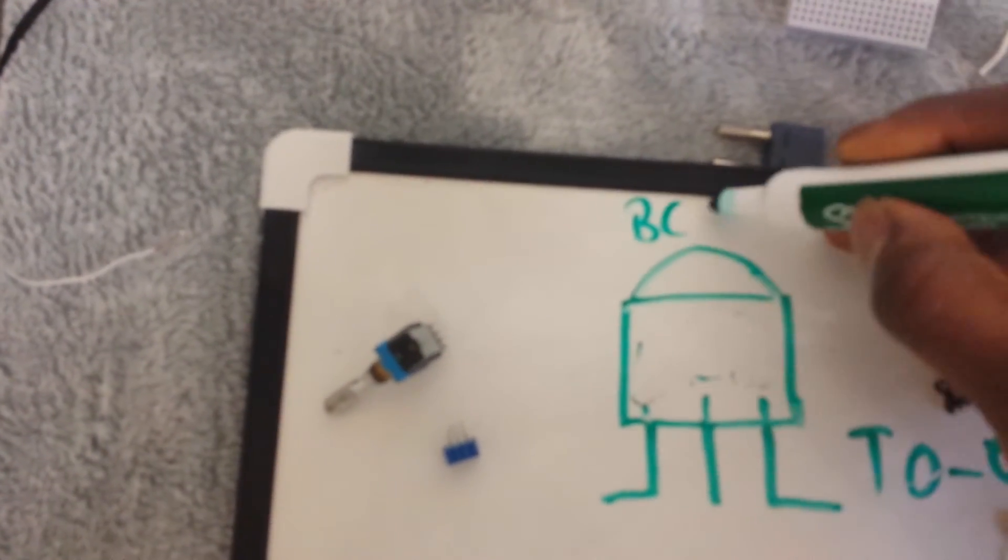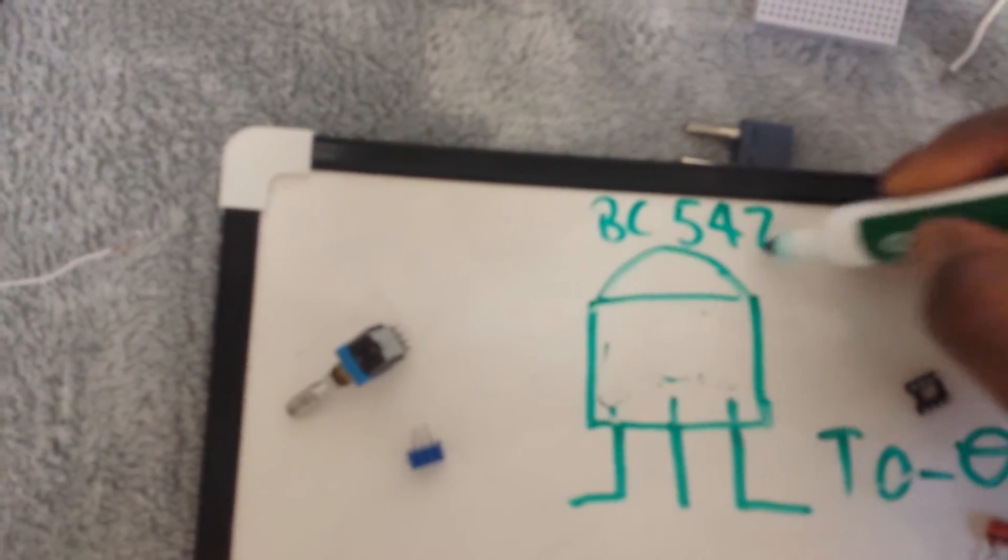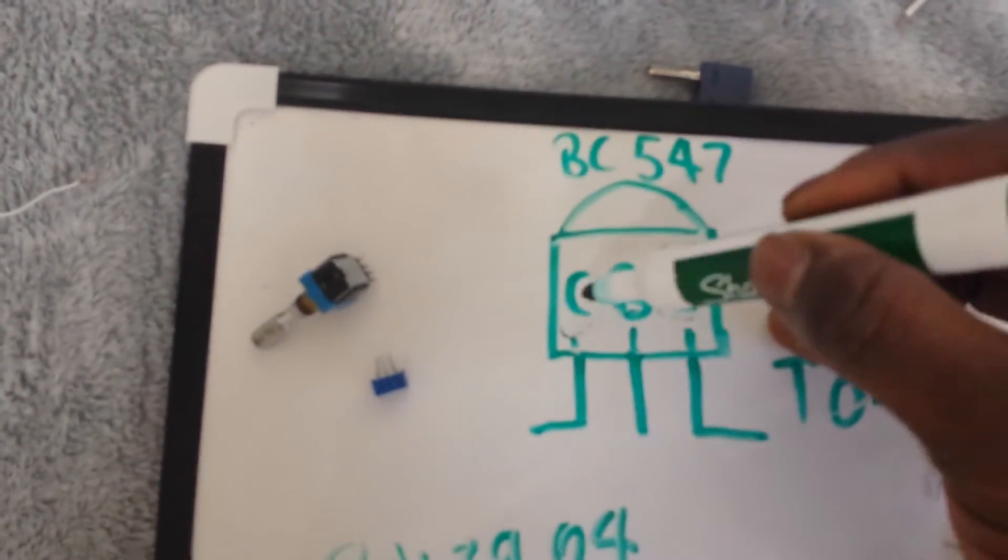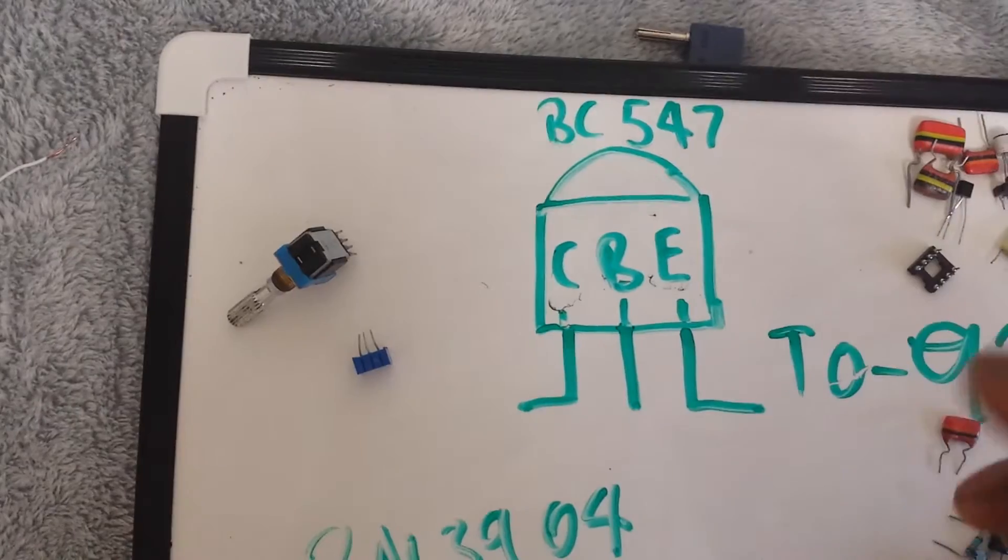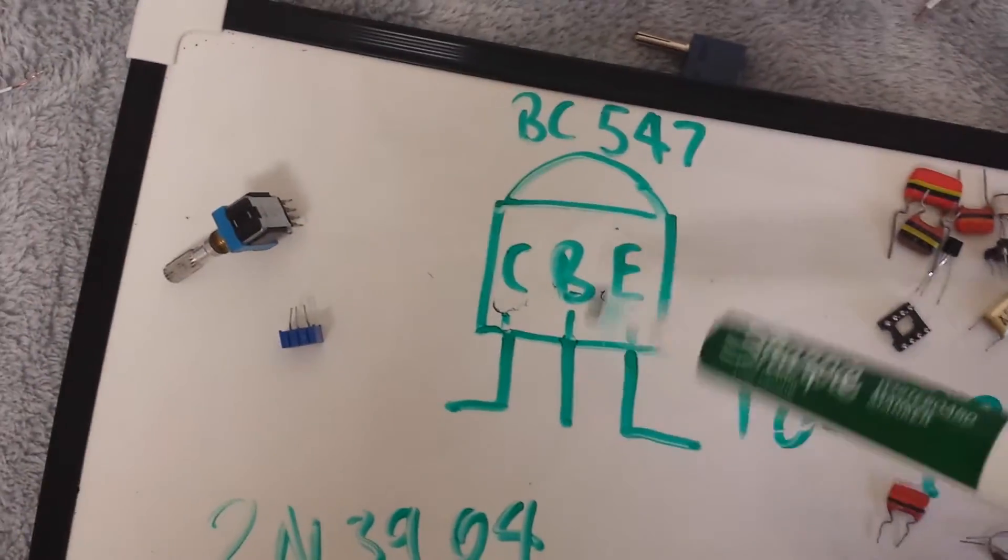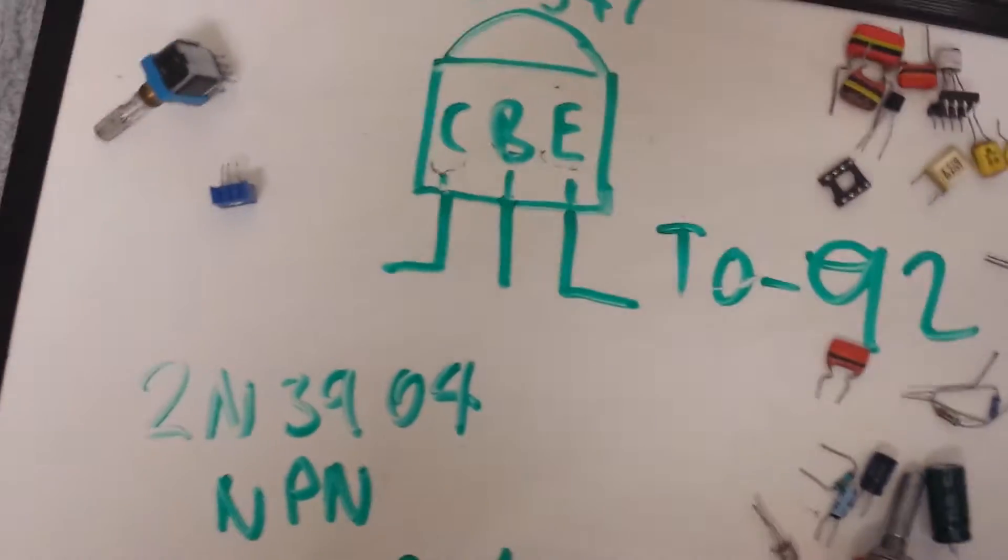But it's not always the case. I mean say for instance we're looking at a transistor like the BC547, our pin outs could be completely different. So we've got collector, base, emitter. Most modern transistors will have the middle pin as the base.